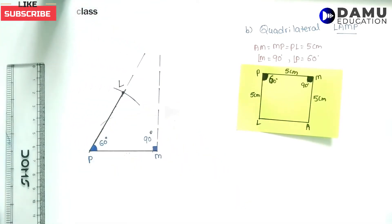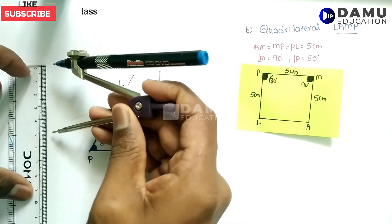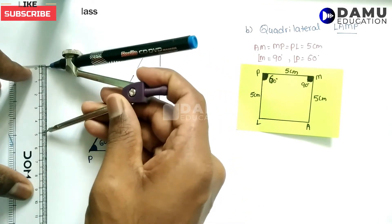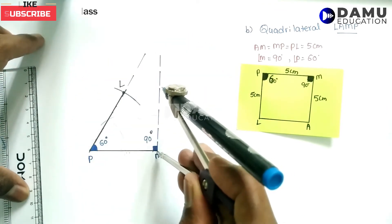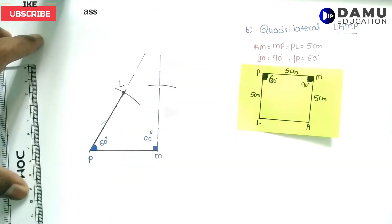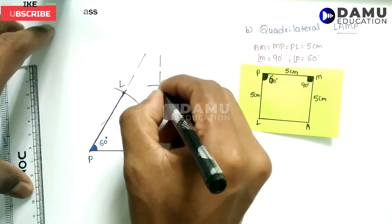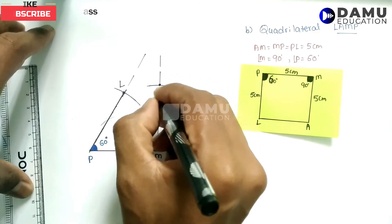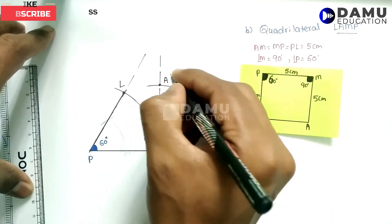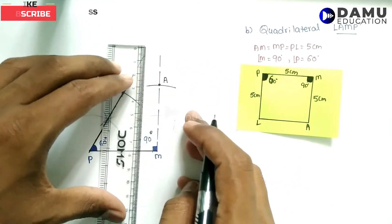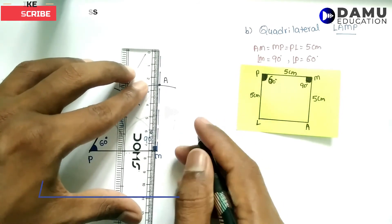From M also we need to take 5 centimetres and draw an arc on the 90 degree ray. The point where this arc is located is point A. So we now have all four vertices: L, A, M, P.